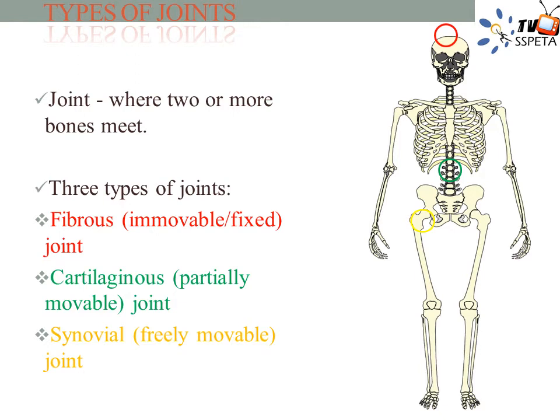Joints can be defined as a point where two or more bones are connected in a human skeletal system. Cartilage is a type of tissue which keeps two adjacent bones from coming into direct contact with each other. The three types of joints are: fibrous joints, also known as fixed joints; cartilaginous joints, also known as slightly movable joints; and synovial joints, also known as freely movable joints.